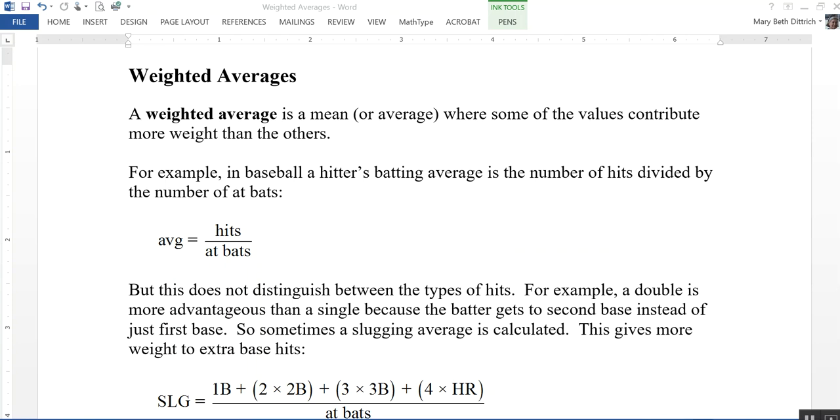But this does not distinguish between the types of hits. For example, hitting a double is more advantageous than hitting a single because the batter gets to second base instead of just first base. He also has the opportunity to drive in a run if there's a runner on second or third base.